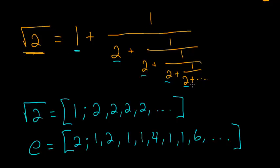One thing we can do with this is essentially truncate it wherever we'd like — we can cut it off and just add up that expression. That will give us a great rational approximation to whatever the continued fraction is equal to. In our case, if we truncate it, it gives a good approximation to the square root of 2, and the further down we truncate it, the better that approximation will be.